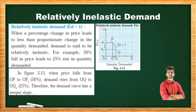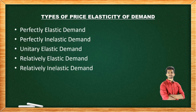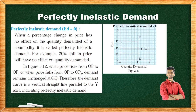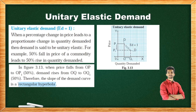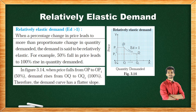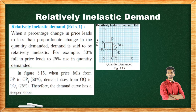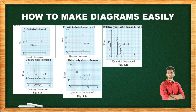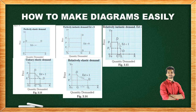In summary: Perfectly Elastic means ED equal to Infinite; Perfectly Inelastic means no effect, no change; Unitary Elastic means ED equal to 1; Relatively Elastic means more than proportionate change; and Relatively Inelastic means less than proportionate change. It is very important to make diagrams clearly. All five diagrams correspond to ED equal to Infinite, ED equal to 0, ED equal to 1, ED greater than 1, and ED less than 1.